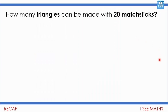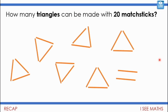Yesterday we looked at using matchsticks and how this helps us understand division. Thinking about how many triangles you can make with 20 matchsticks is very much like division. Pause the video if you need to, or you might just be able to picture it now. How many triangles can be made with 20 matchsticks? Well, of course six — six lots of three is 18, with two matchsticks left over.